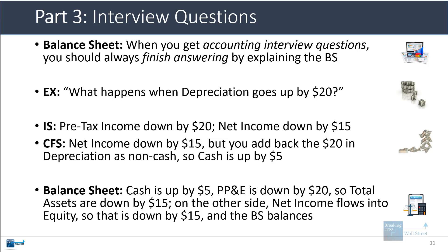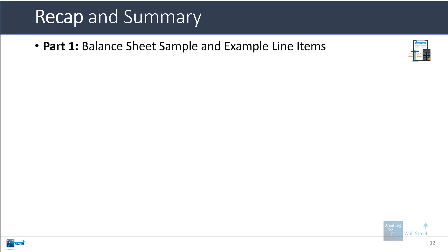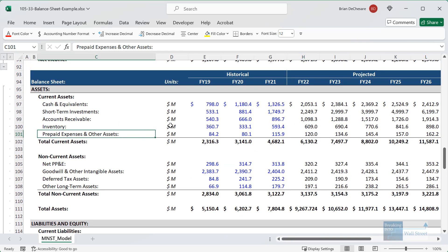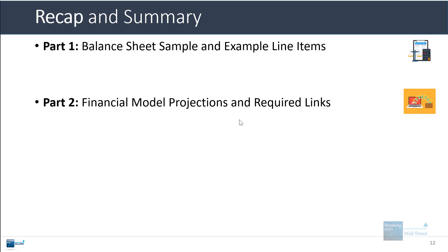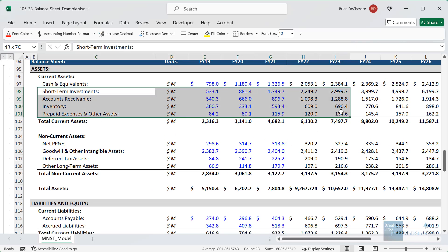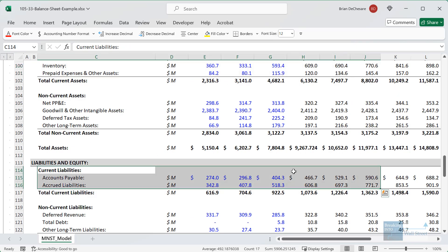This is a simple example, but the same strategy works for more complex questions. If the balance sheet balances at the end, there's a good chance you are correct; if it doesn't balance, you've definitely done something wrong. That's how the balance sheet comes up in interviews. To recap: current assets and current liabilities tend to be linked to income statement line items, while longer-term assets and liabilities flow from the cash flow statement, with some exceptions like lease assets and long-term deferred revenue.